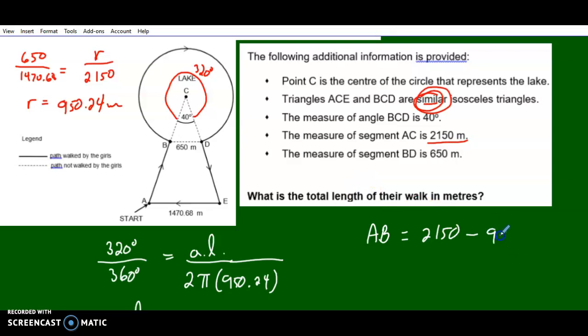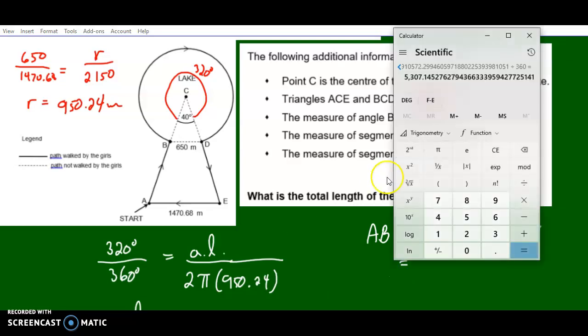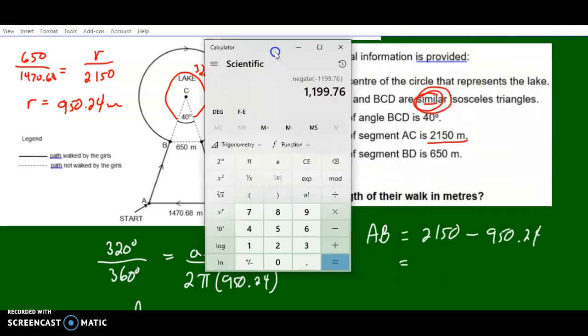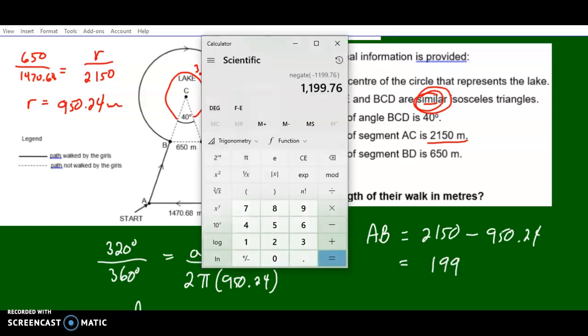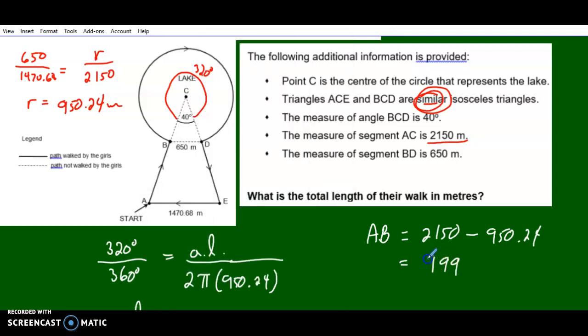Let's figure that out. 950.24 minus... I did it in the wrong order. 2150 minus 950.24 equals 1199.76 meters.